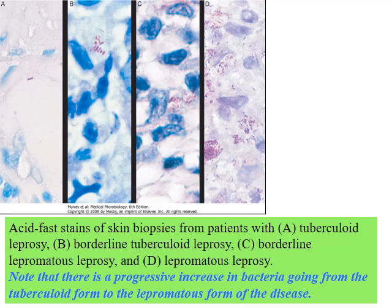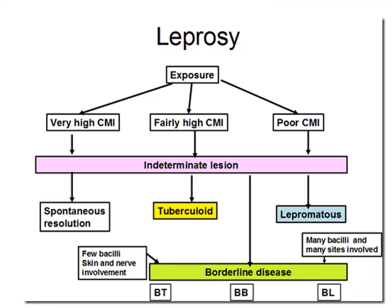The clinical flowchart: upon exposure, if you have very good cell-mediated immunity you can resolve the issue. With poor cell-mediated immunity you develop a lepromatous response. With intermediate immunity you have one of the various borderline responses that do normally occur.